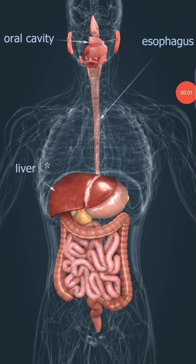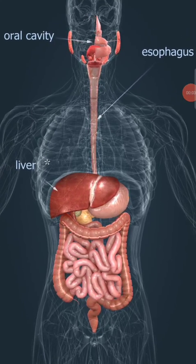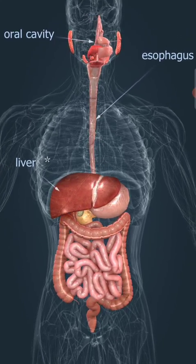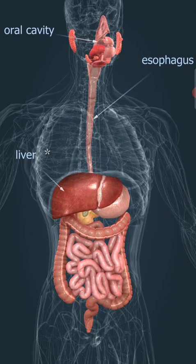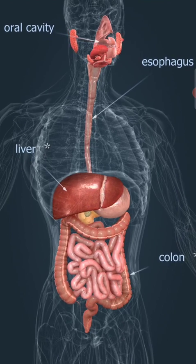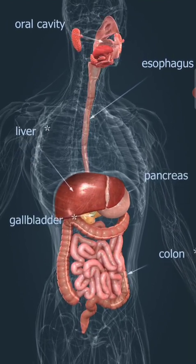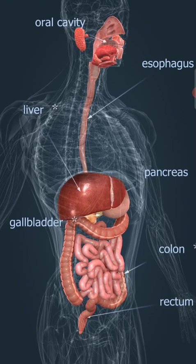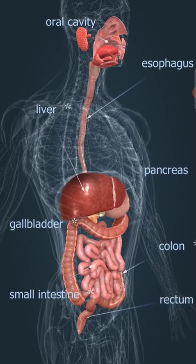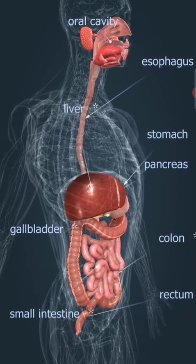The digestive system is responsible for the digestion and absorption of nutrients. Food is crushed in the mouth by the teeth, and the digestion of carbohydrates begins here too.